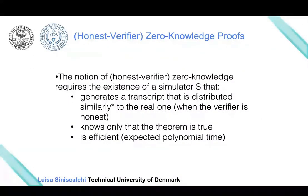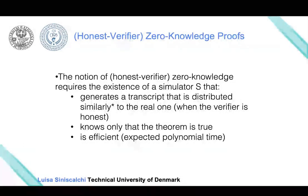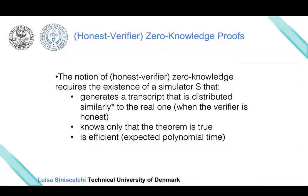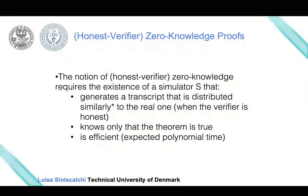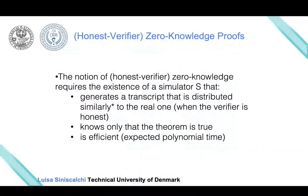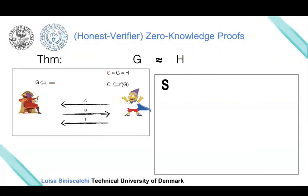I will now describe a simulator with respect to an honest verifier. This means the verifier wants to try to infer more information about the witness—the permutation—but will follow the protocol honestly, choosing a random coin to decide whether to send graph G or H. The next step is to define how simulator S works: S will toss a coin and choose a graph, then apply a permutation on G to compute graph C.